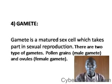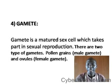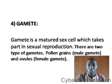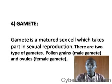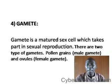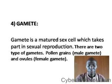Gametes are matured sex cells which take part in sexual reproduction. There are two types of gametes: pollen grains, which are the male gametes, and ovules, which are the female gametes.